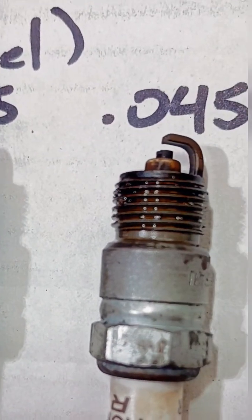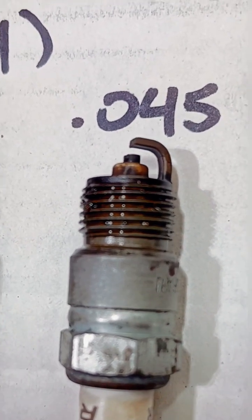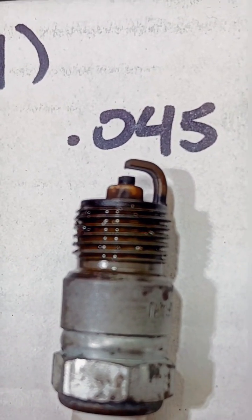Next up is 45 thousandths. 45 thousandths is another common gap in a lot of V8 engines. HEI ignition used 45 thousandths a lot.